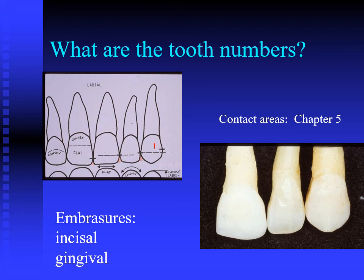For example, if the mesial incisal angle on central incisor number 9 has been fractured off, you have to have a concept in your mind of how you're going to rebuild that tooth to match the natural tooth structure. In dental anatomy, we're going to use wax to help you build this concept. I recommend you practice drawing these teeth right now.